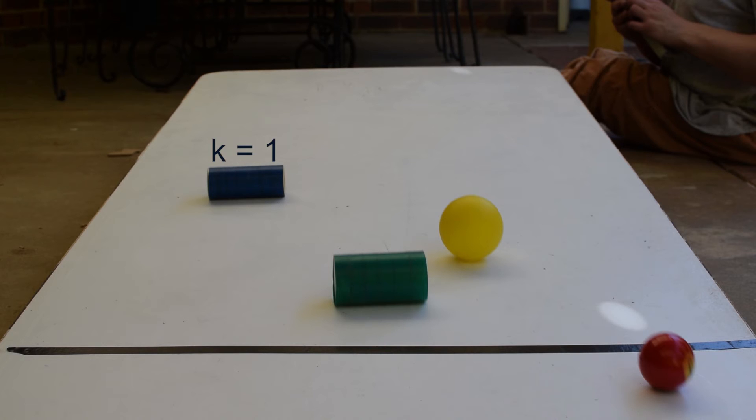The same approximation is applied to the hollow sphere, which has a constant equal to two thirds and comes in third. The solid cylinder has a constant of a half and is the runner up. And the winner is the solid sphere, which has a constant equal to two fifths.